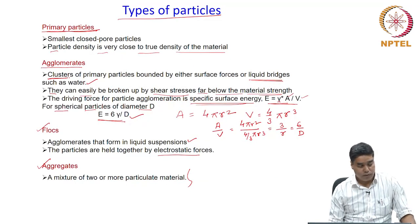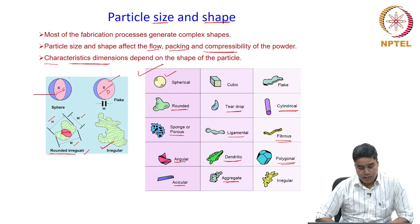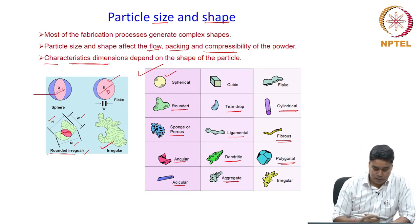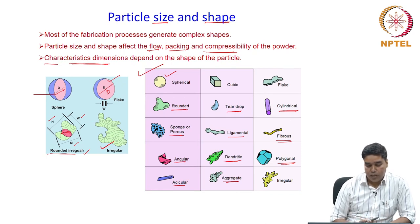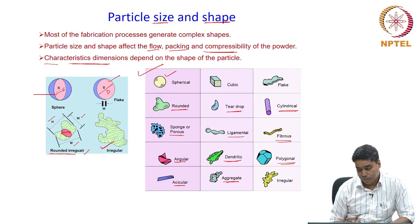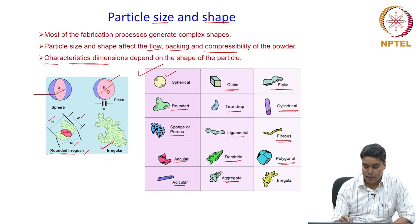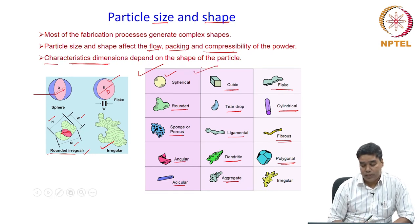We also talked about different types of particles: primary particles, agglomerates, flocs, and aggregates. Finally, we defined particle shape and size — size can be defined in terms of a characteristic dimension which depends on the type of particles, and shape can be qualitatively defined by descriptive terms for different types of particle morphology. With that we come to the end of this class. Thank you for your attention.